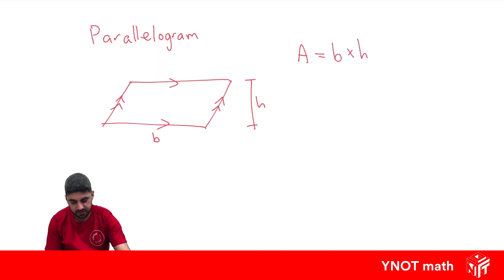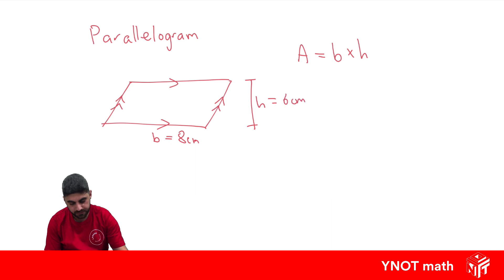The area is going to be the base times the height. So if the base was equal to 8 centimeters and the height was equal to 6 centimeters, our area would just be 8 times 6, which is 48 centimeters squared.